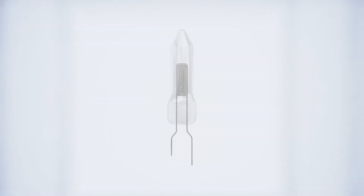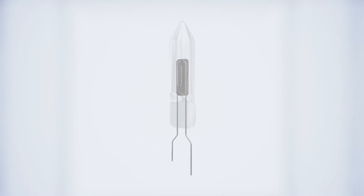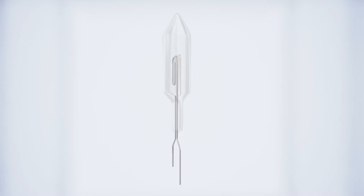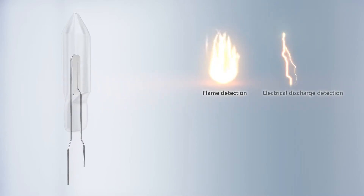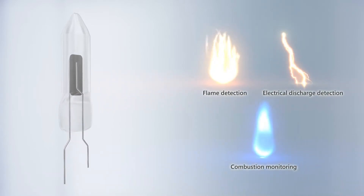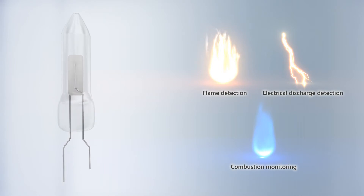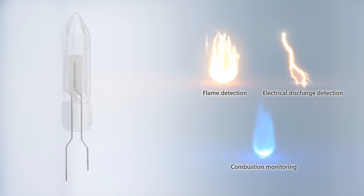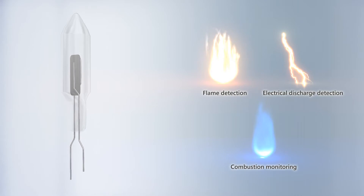UVtron is a UV sensor that is sensitive only to UV light. UVtron is used in a wide range of applications including flame detection, electrical discharge detection, and combustion monitoring. Its superior product performance and characteristics ensure use in an ever-growing range of applications.